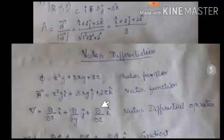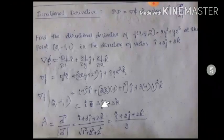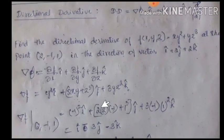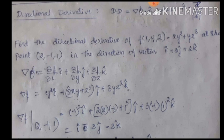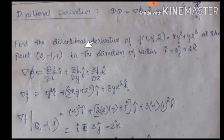One more type of problem is the directional derivative. Directional derivative is defined as del phi dot n cap, where n cap is the unit normal vector defined as d vector divided by the magnitude of d vector. Let's solve a problem: find the directional derivative of a function f at a particular point along with the direction of a given vector. That given vector is d vector.